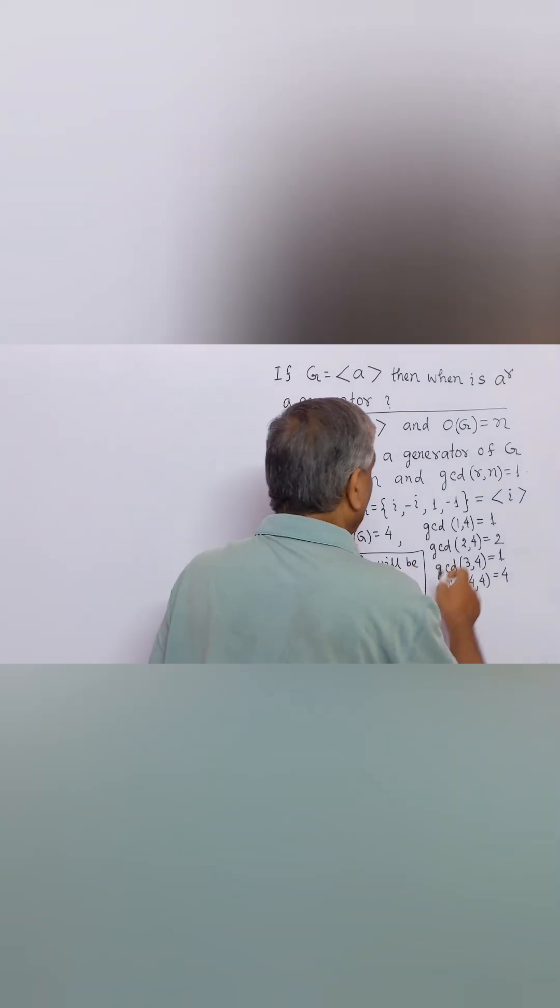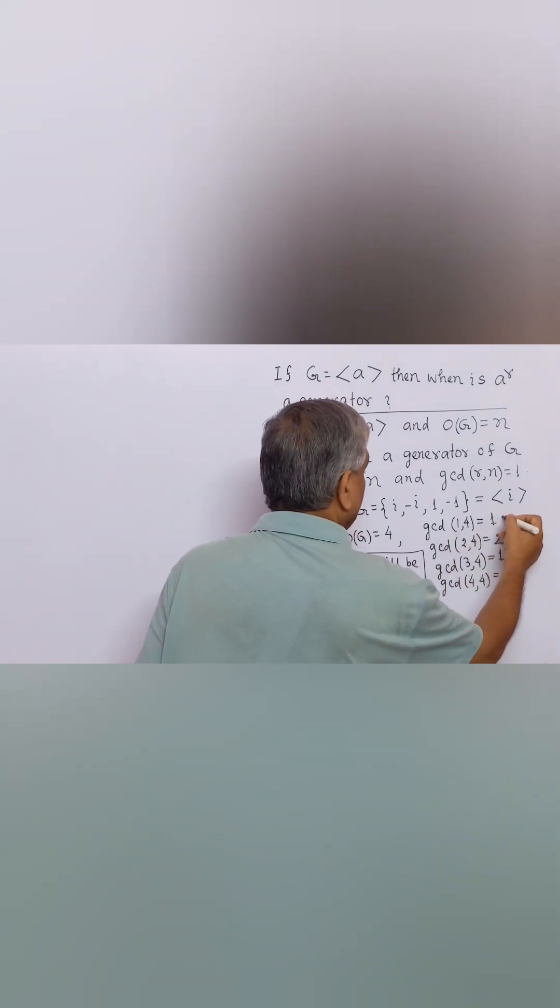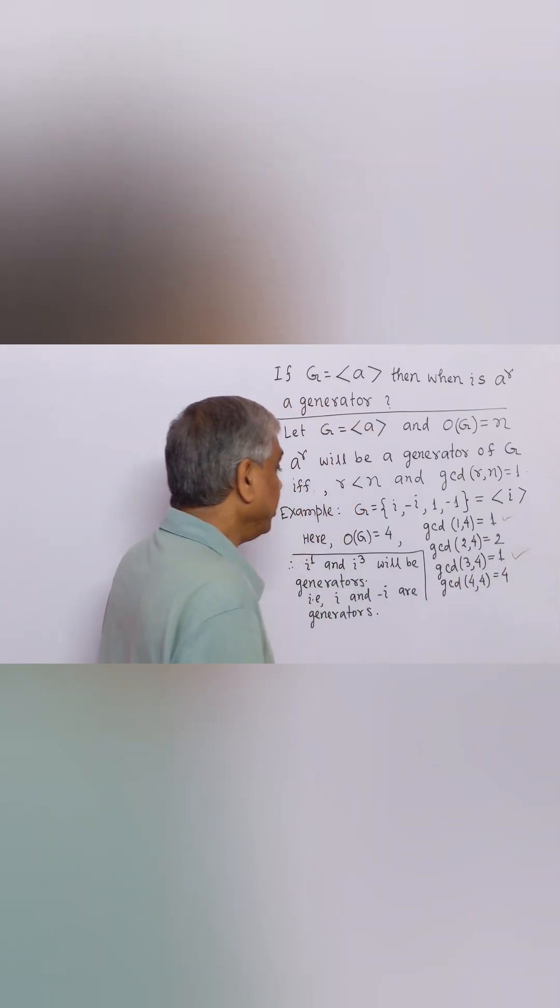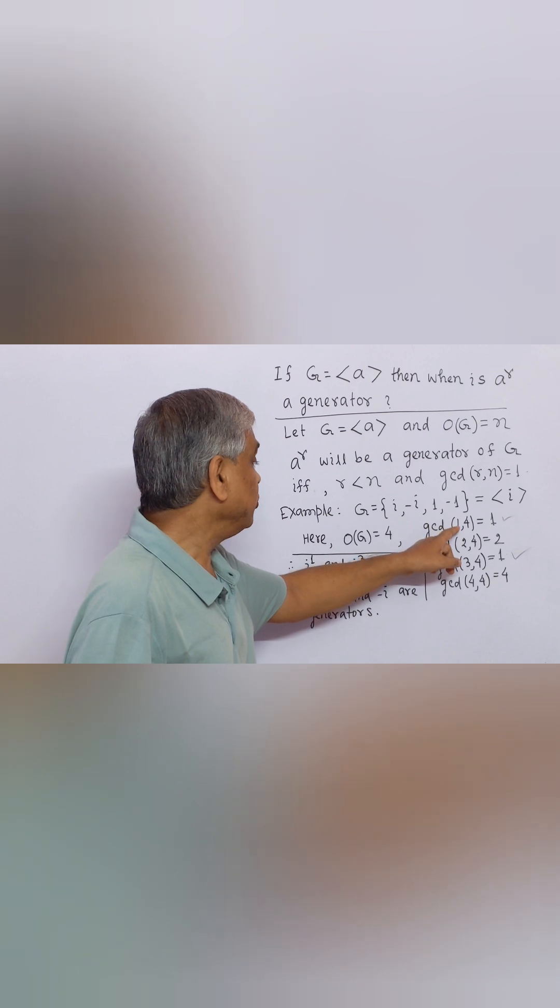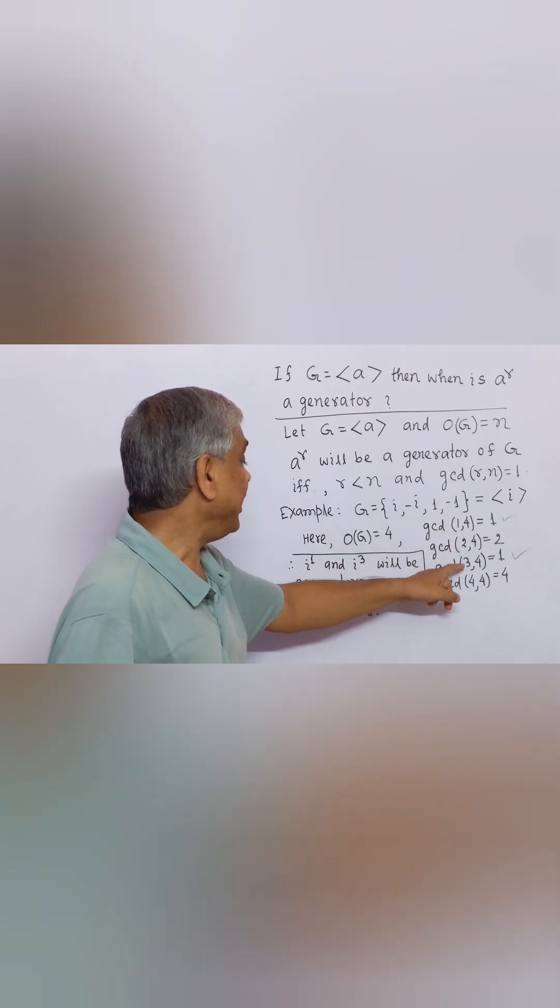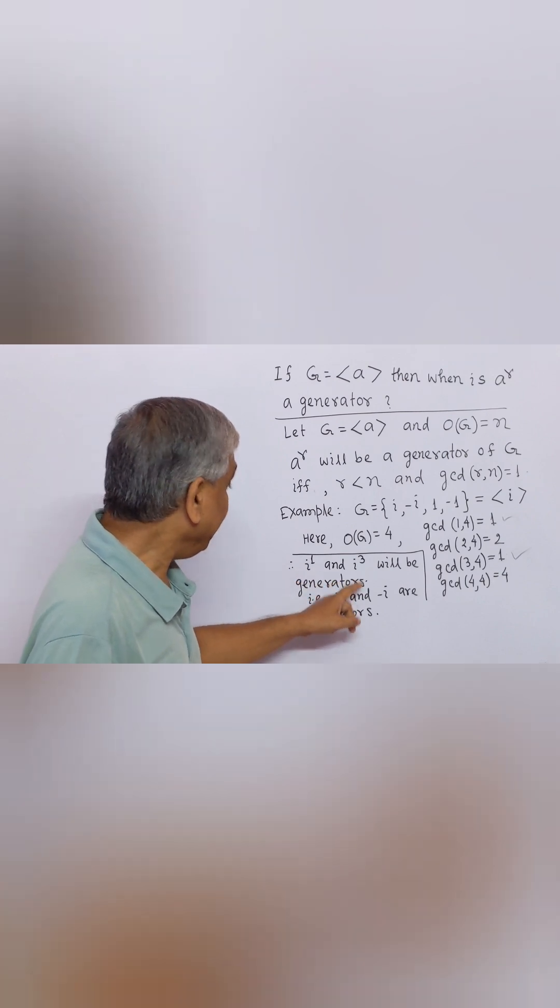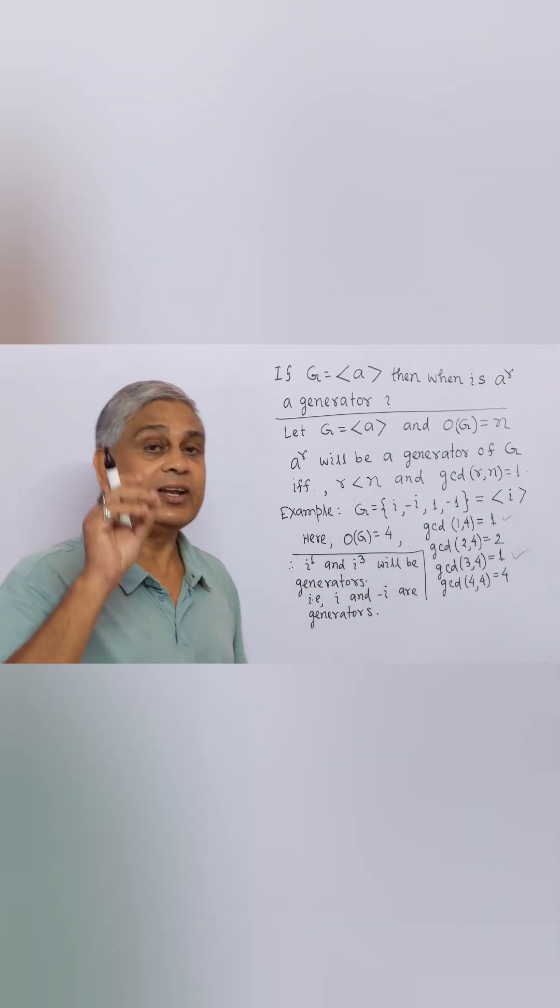Here, GCD of 1 and 4 equal to 1. GCD of 3 and 4 equal to 1. Therefore, generators are I to the power 1 and I to the power 3. That is, I and minus I are generators.